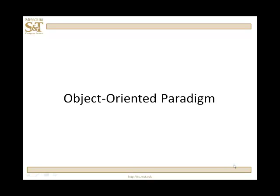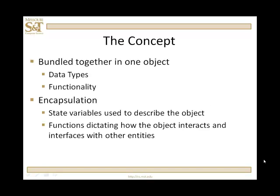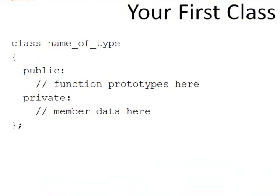You're going to do that with something called a class. You've seen structs already in these lessons, and a class is very much like a struct. The idea is to bundle together different data types into one type — but not only data types, also the functionality that defines how these objects interact with each other and interface with other entities. We call this encapsulation. Our basic building block is the class, and the key keywords are: class, public, and private.